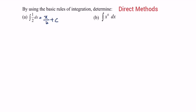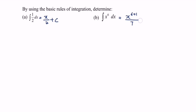For part B, integrate x to the power of six with respect to x. We obtain x to the power of six plus one, over six plus one, which simplifies to x to the power of seven over seven, plus c.